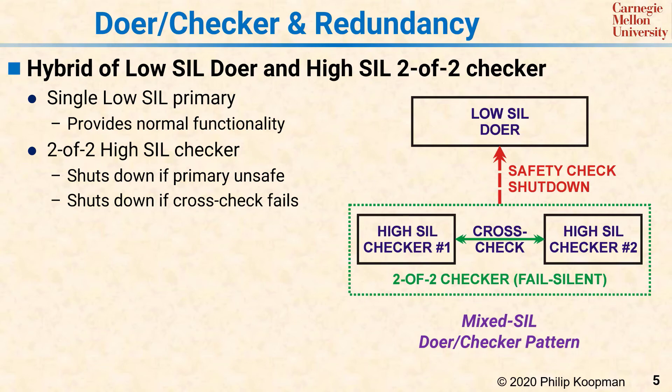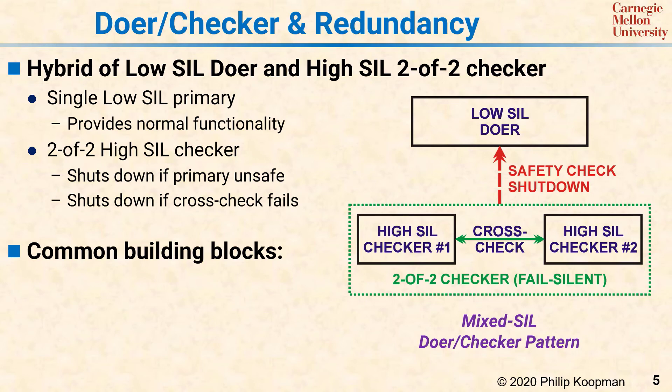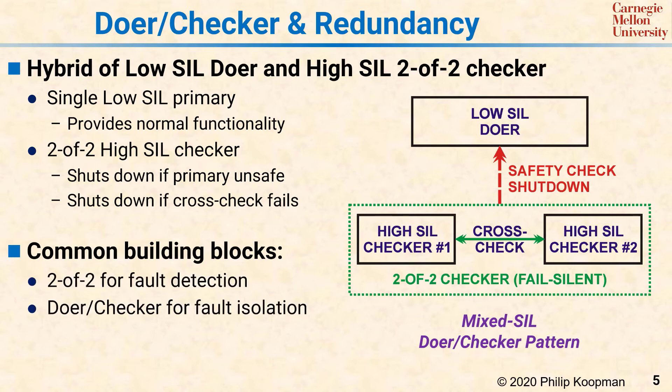These are just examples of how various patterns can be used—any particular system should use the right combination. The typical mechanisms combined are 2-of-2 pairs for fault detection, a doer-checker strategy for isolating high- and low-SIL software, and hot standby to improve availability after a fault occurs.